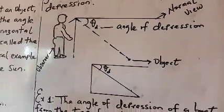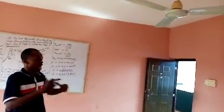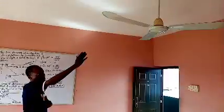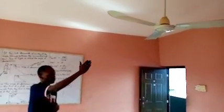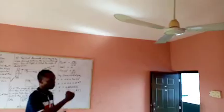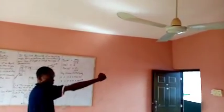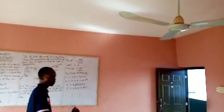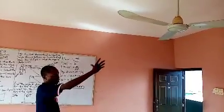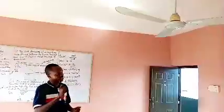Let's practicalize this using real-life scenarios. Let's look at this fan — the fan is above me and we have to look upward to it. The angle formed between my normal horizontal view and the line of sight to the object that is above me is what they call the angle of elevation.